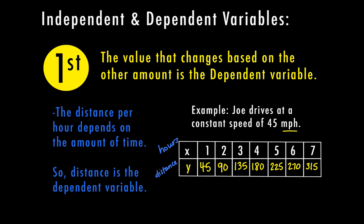The more hours he drives, the farther his distance. So the distance depends on the amount of time, which means distance is our dependent variable. The y value is usually the dependent variable — you're normally going to see the y value as the dependent variable.